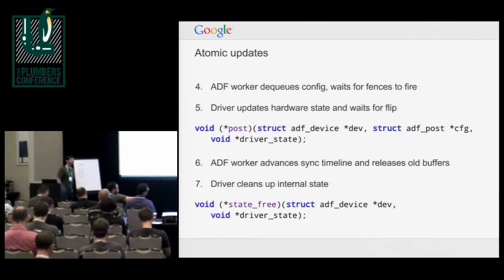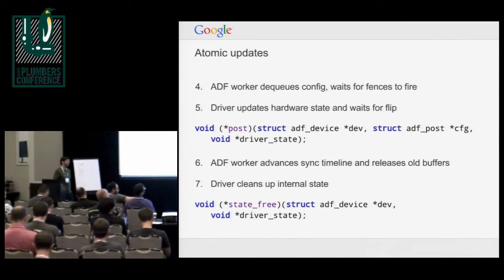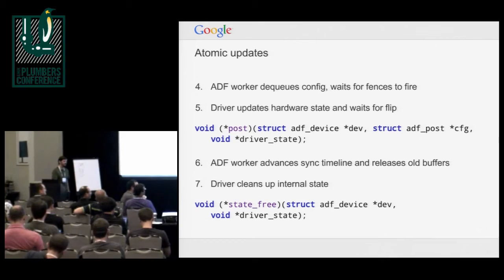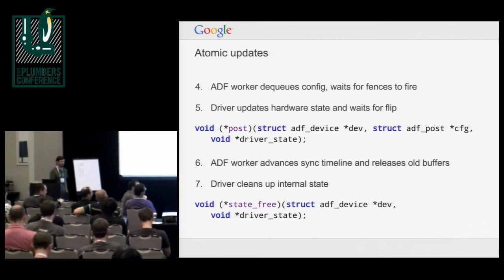The questioner noted that importing a DMA buf into a GEM handle, in their implementation, represents a mapping of that buffer into a GPU or display VA. The response was that in Android, essentially any buffer — any Gralloc buffer — could end up on screen, so you could potentially cache all those mappings and import all your buffers, pulling them back out when freed. The short answer to the original question is: it depends on the DMA buf implementation.